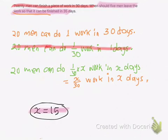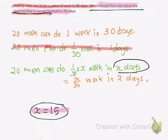So as our x value is 15, we can say that our question has asked us when should 5 men leave the work. So I suppose here the 5 men left the work after 20 men have worked for x days. So 5 men leave.